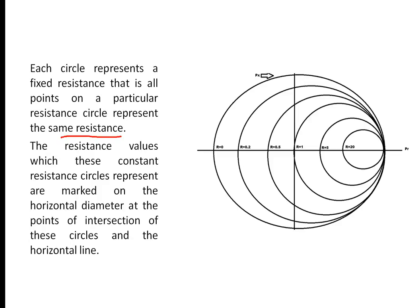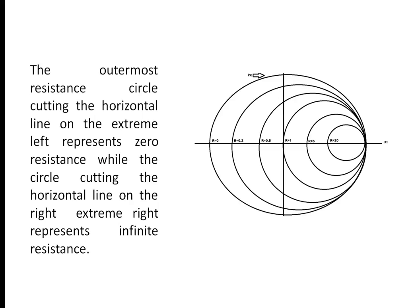Each circle represents a fixed resistance — that is, all points on a particular resistance circle represent the same resistance. For example, the resistance value for this circle is R equals 20. The resistance values which these constant resistance circles represent are marked on the horizontal diameter at the point of intersection of these circles and the horizontal line. The outermost resistance circle on the extreme left represents zero resistance, while the circle on the right represents infinite resistance.